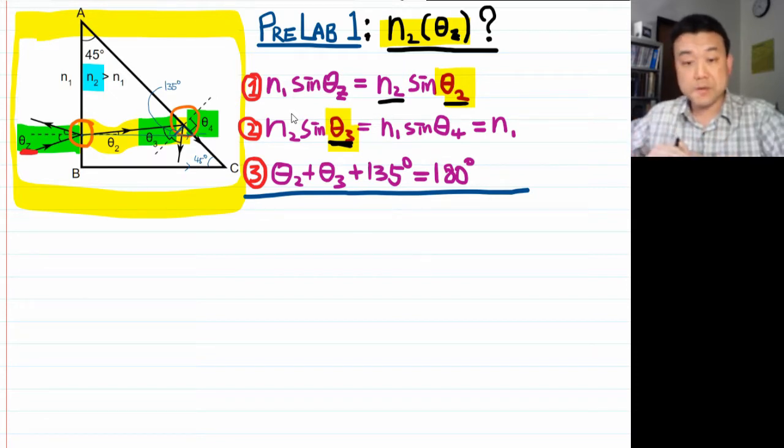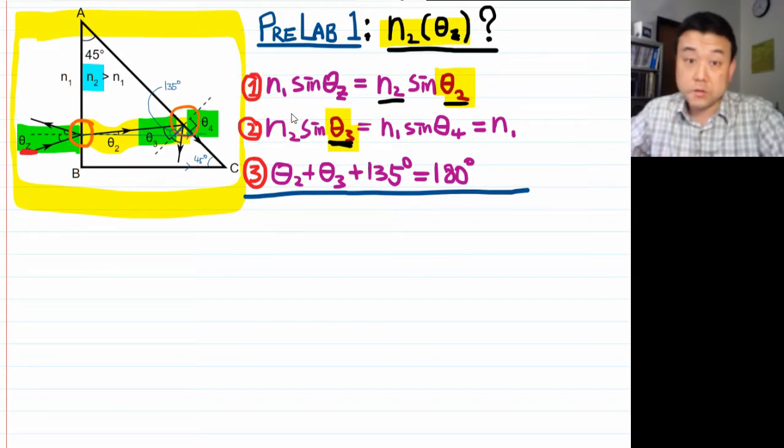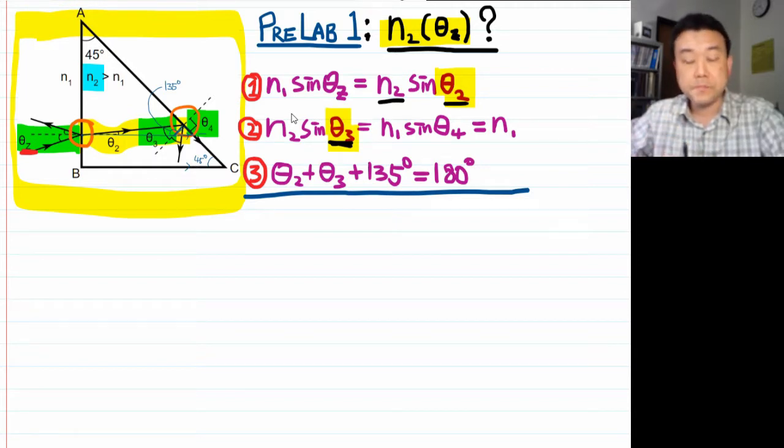And the second step is, I like to call it just algebra. Now that doesn't mean it's easy. But separating it into these two steps allows you to figure out what you need to work on more. Do you need to study physics more so that you have these things like Snell's law at your fingertips? Or do you need more algebra practice? Because what I see is that a lot of students actually could use more algebra and trigonometry practice.